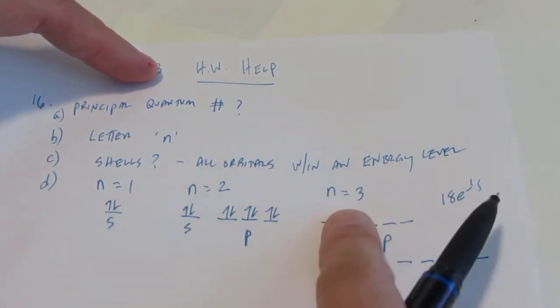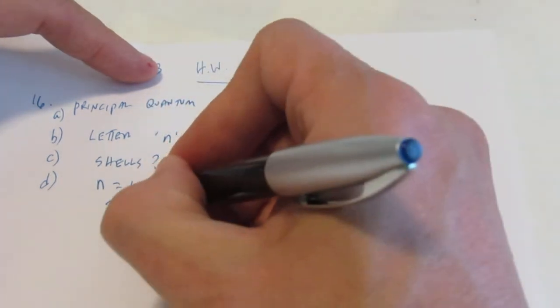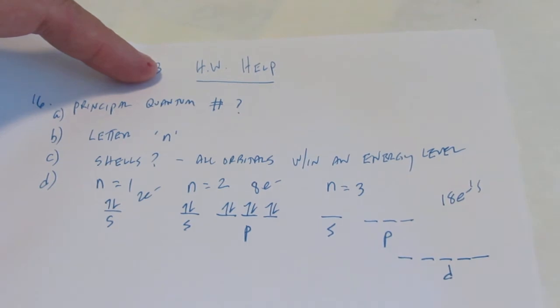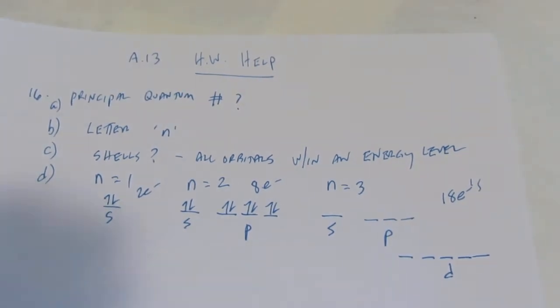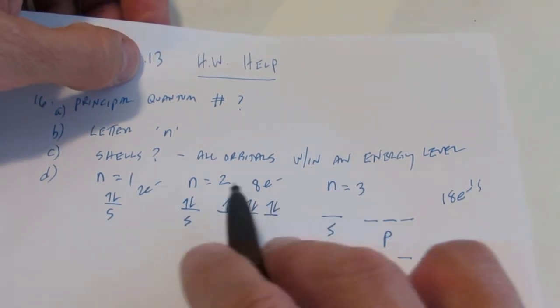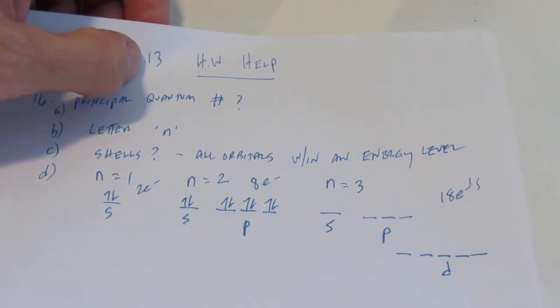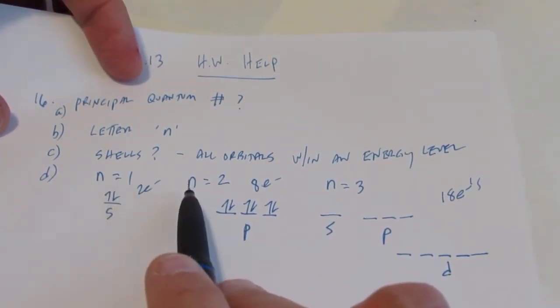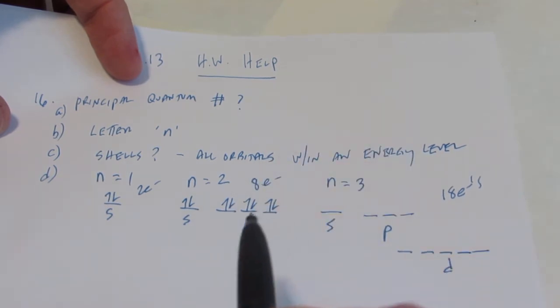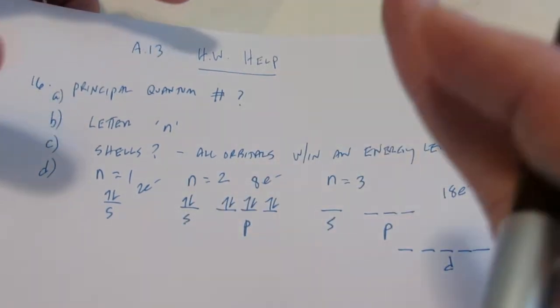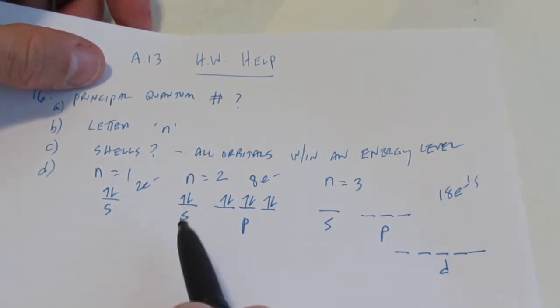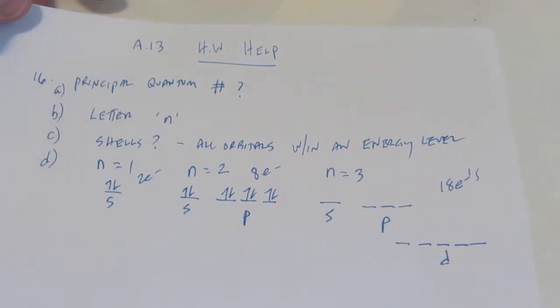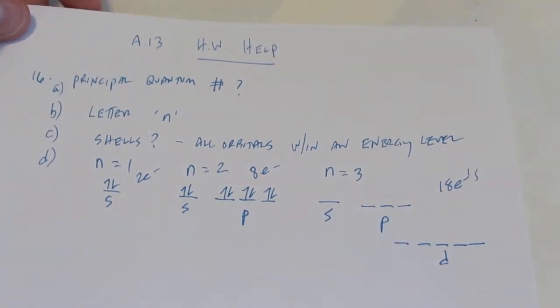So you can see as the energy level number increases, I go from two electrons to eight electrons to eighteen. So I wonder if there's a little rule there, that if we know the energy level number we can figure out how many electrons it can hold. I'll let you stew over that one. But the obvious point is, as you get to a higher energy level, the electrons have more energy, so they can make bigger and neater shapes. They can go from an S to an S and a P, to an S, a P, and a D, and to an S, a P, a D, and of course an F. Okay, that wraps up question sixteen.